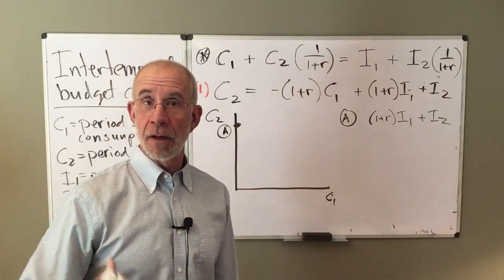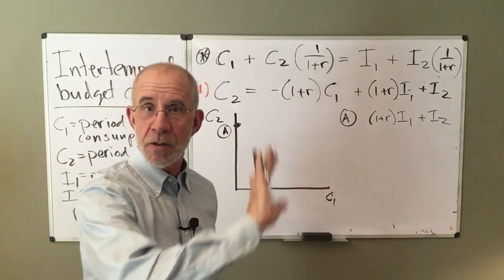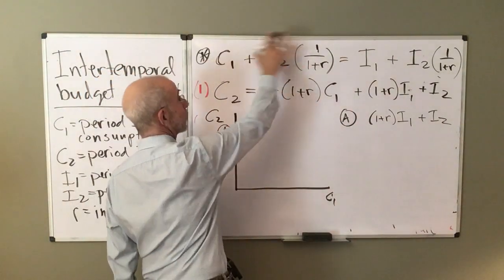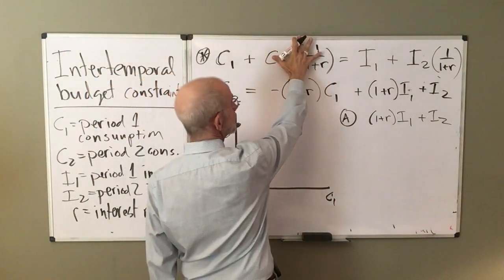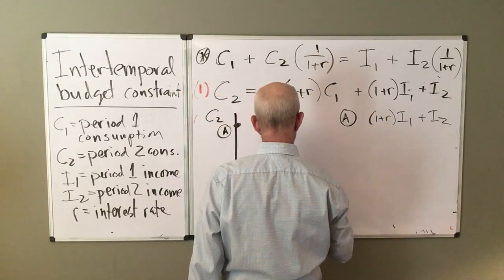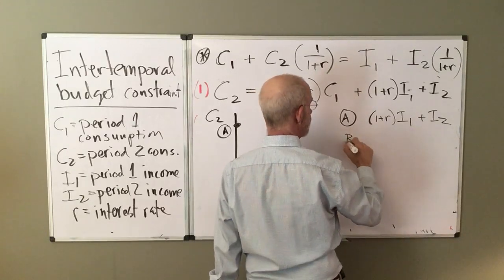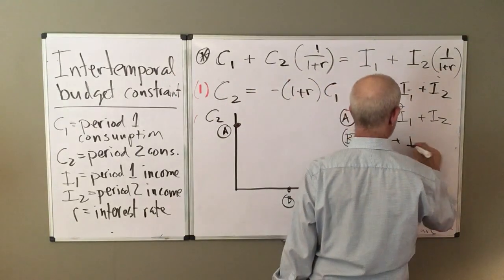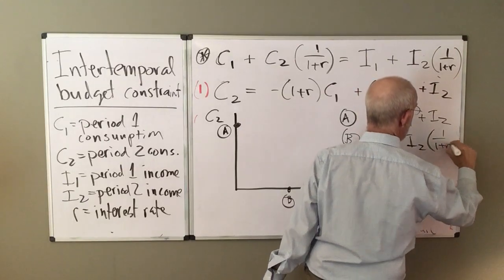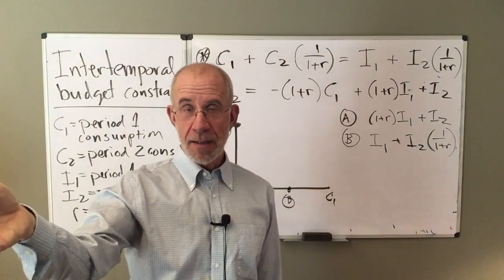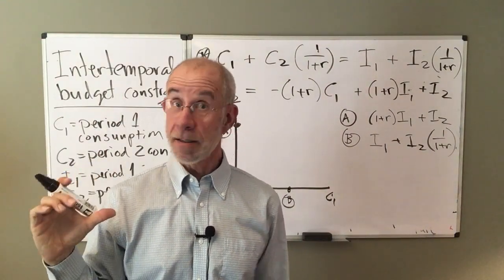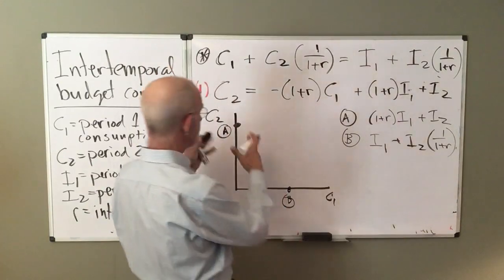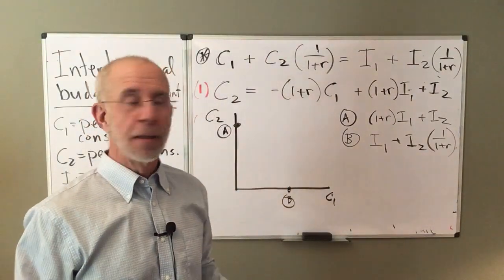Now, what's the maximum amount of C one that I could consume? If I didn't consume anything in the future, I partied today. Well, we can go back up to this original equation and get that. If C two is equal to zero, what we have is point B. That's going to be equal to whatever I get in the first period, plus I discount the value of my income in the second period and use it to buy stuff today. Because I know I'm going to be able to get the income in the second period. So that's the maximum. Now, you're probably aren't going to choose either to only consume today or only consume tomorrow. It's probably going to be something in between.